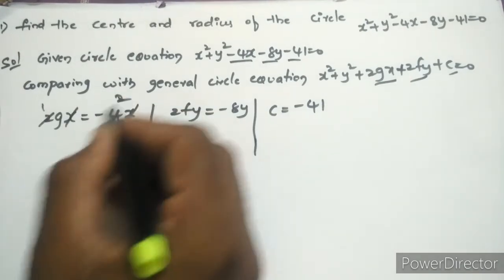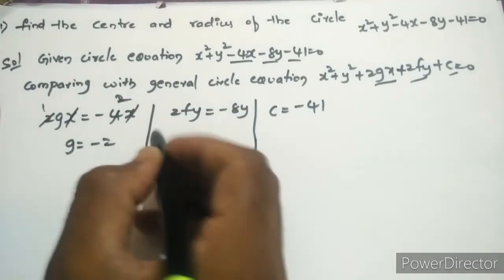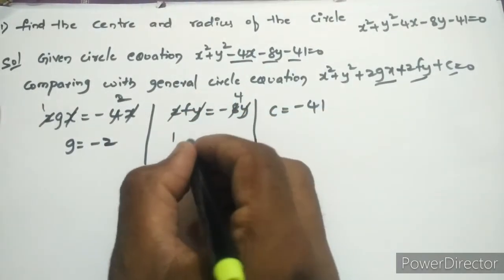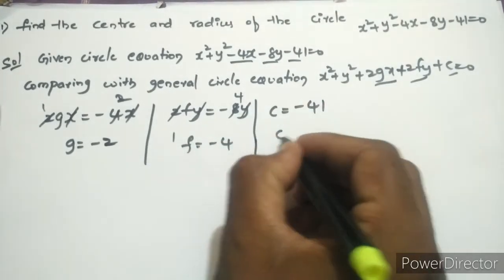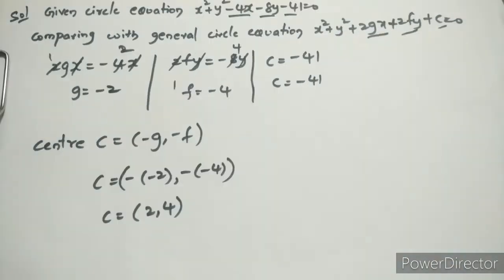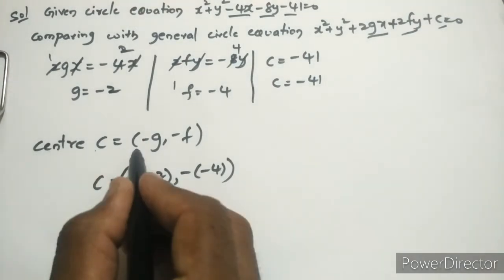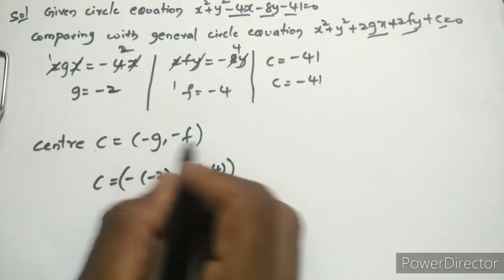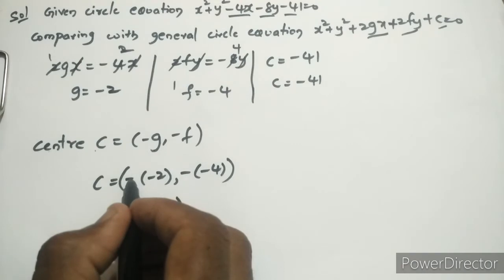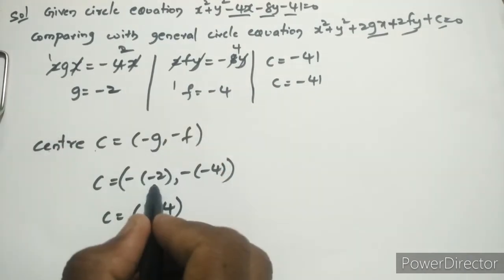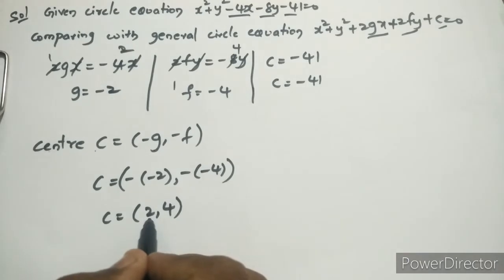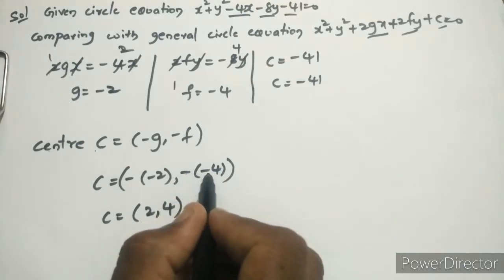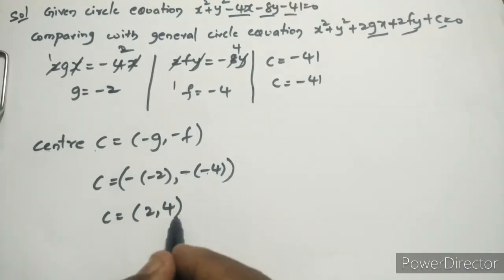Canceling x and dividing by 2, g = -2. Canceling y and dividing by 2, f = -4. c = -41. The center is (-g, -f): -g = -(-2) = 2 and -f = -(-4) = 4. So the center is (2, 4).